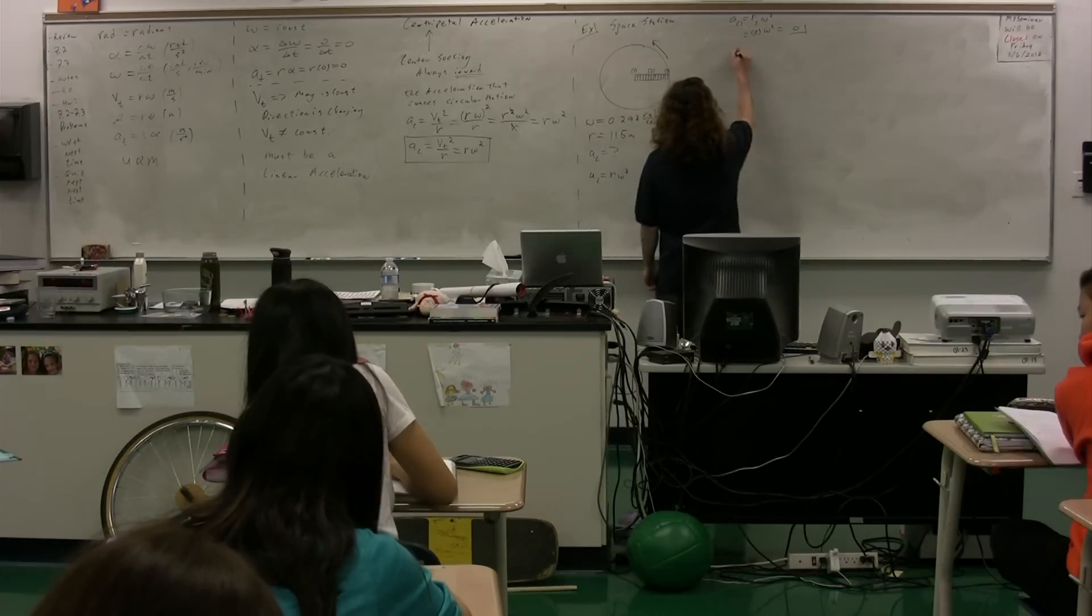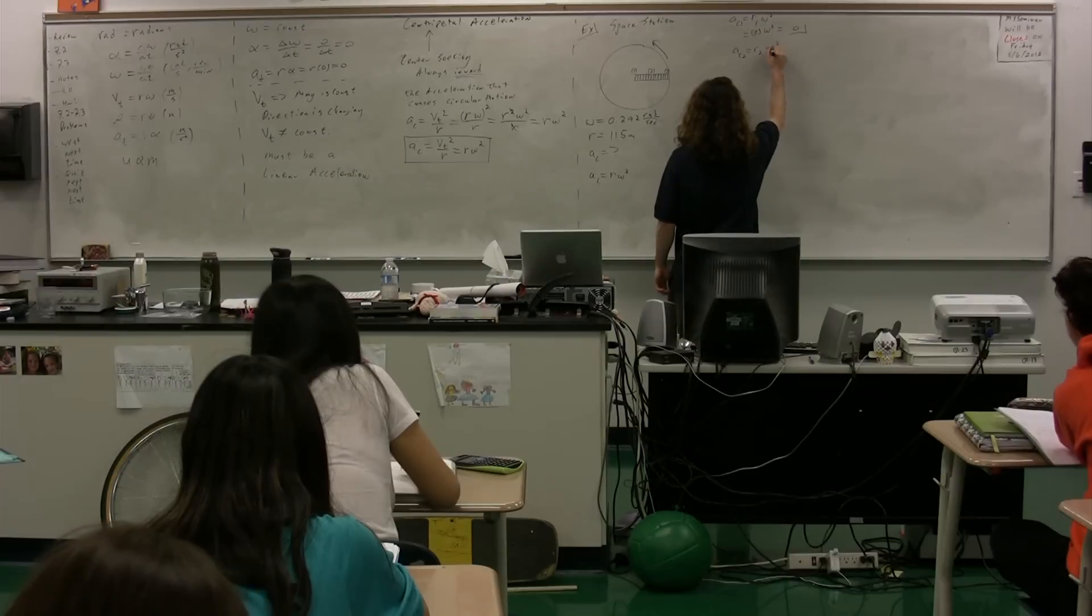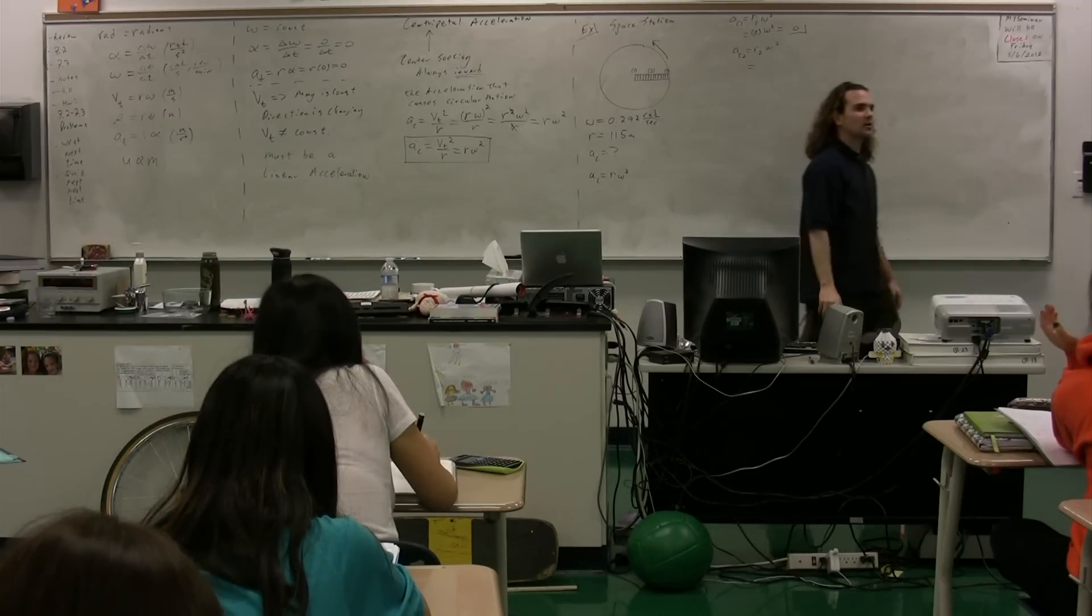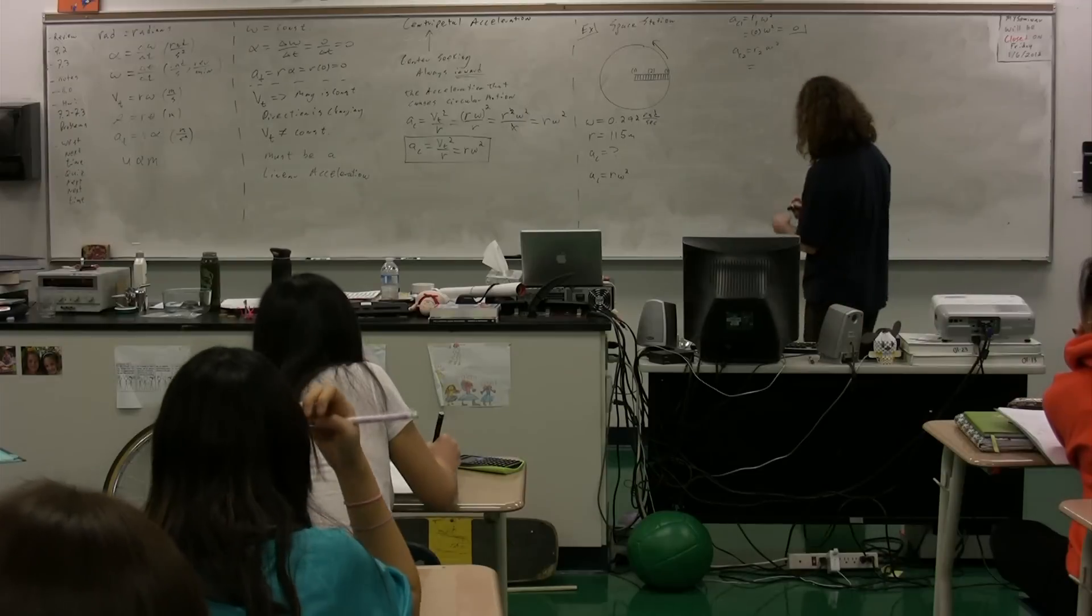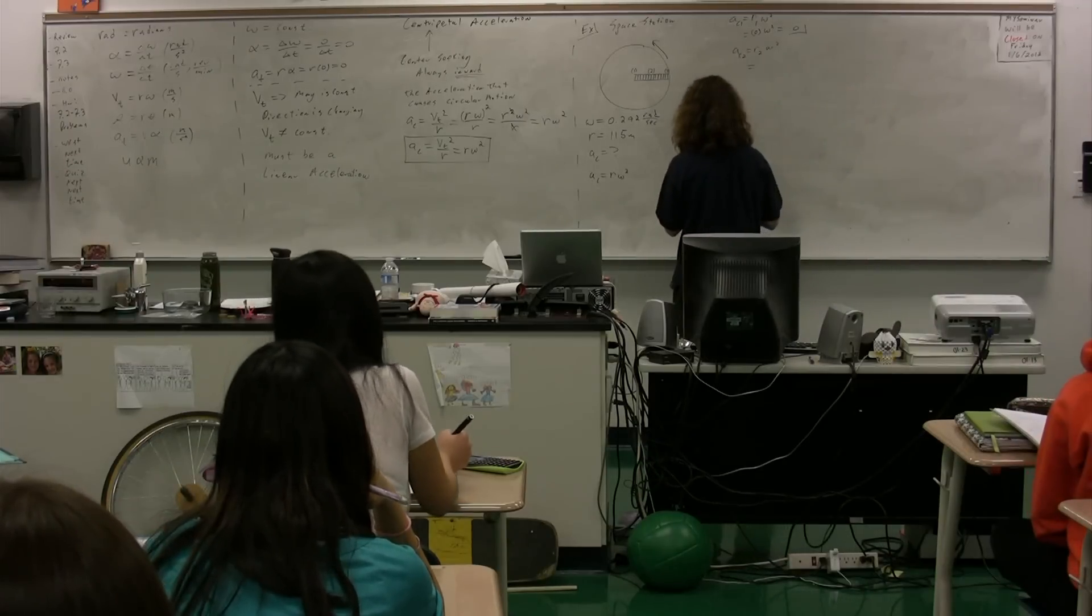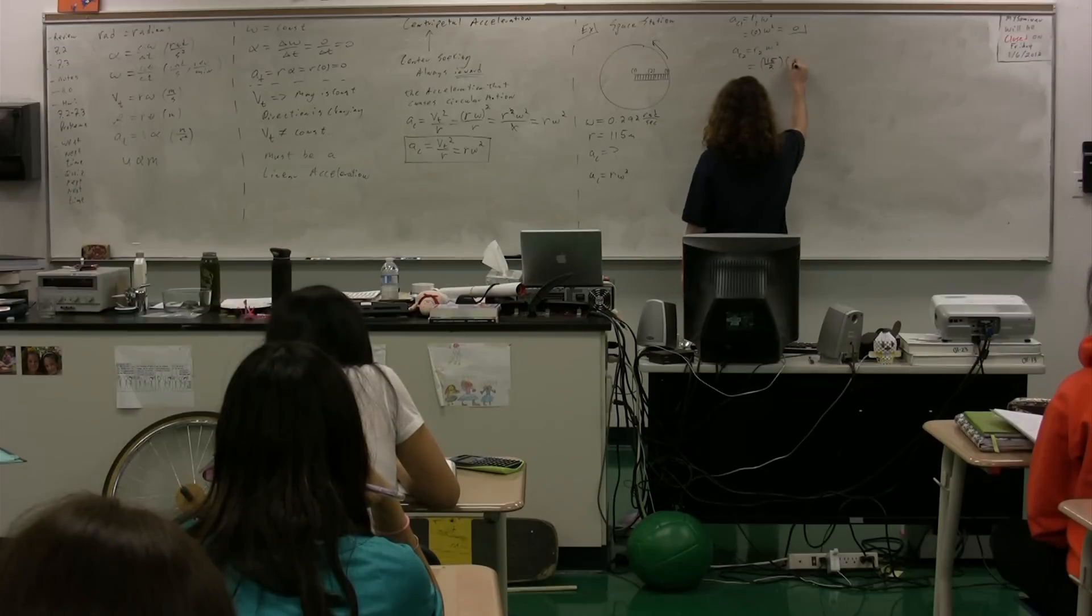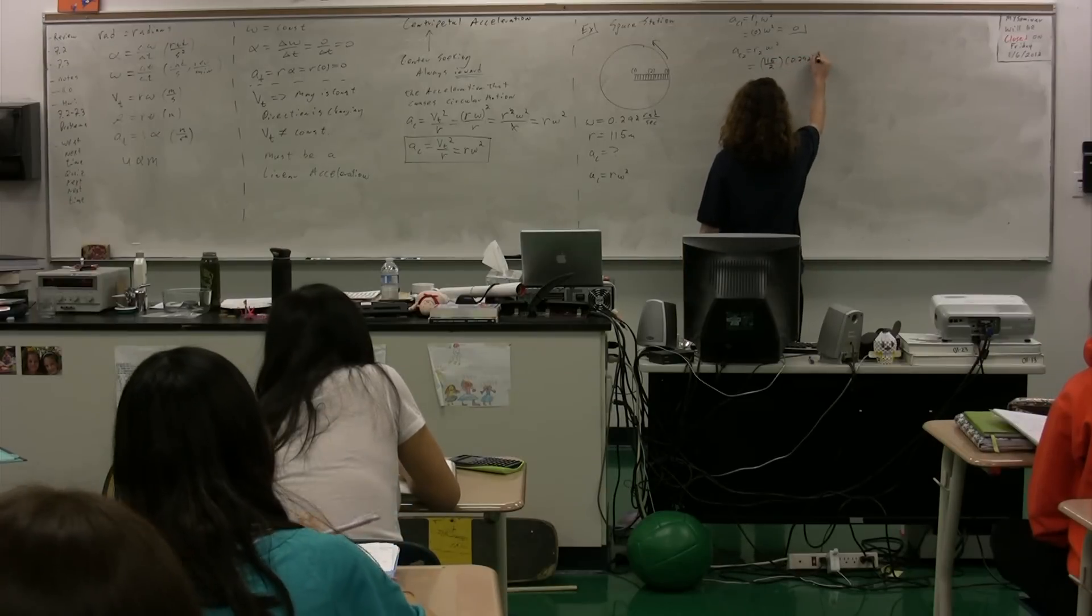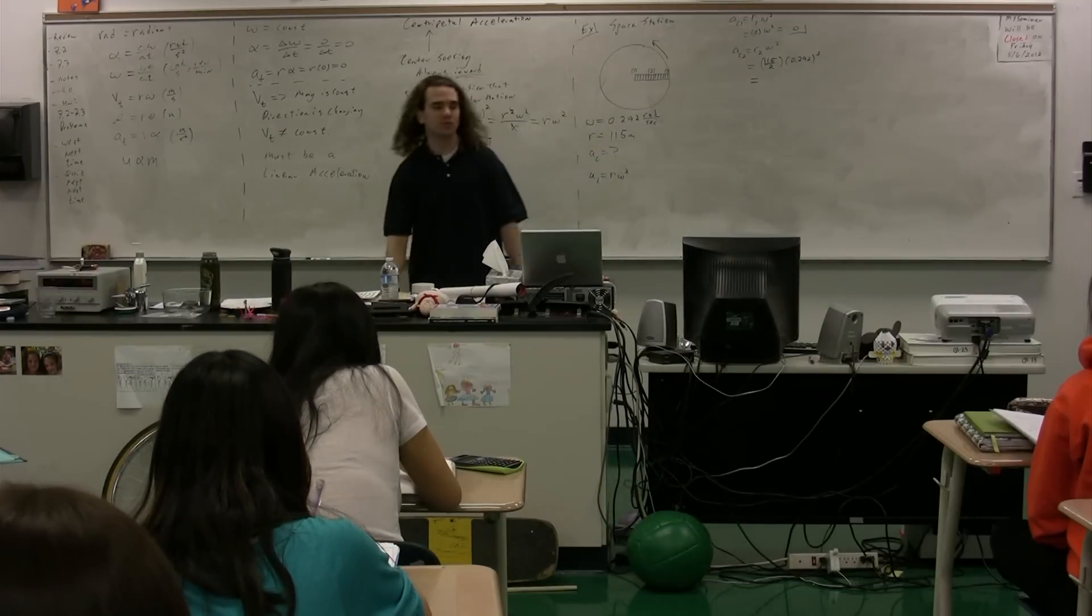The centripetal acceleration when we're halfway down is going to be equal to r2 times omega squared. What is r2? Laura? We have 115 divided by 2 times 0.292, that quantity squared. 115 divided by 2 times 0.292 squared.